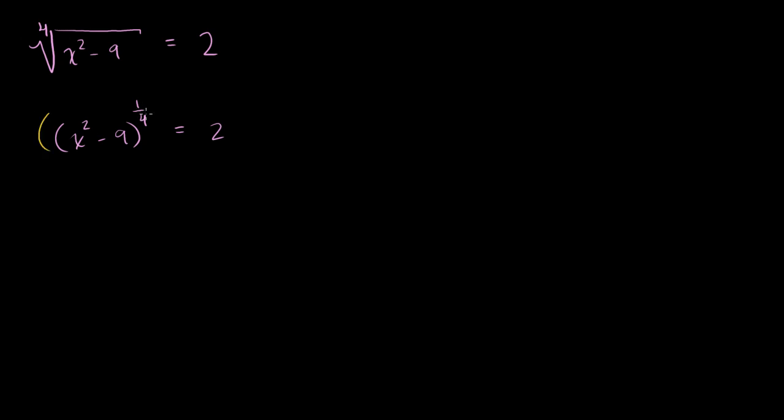Now, if we raise both sides to the fourth power, what happens to this exponent right here? If we raise something to an exponent and then raise that to another exponent, we multiply the exponents. So one-fourth times 4 is 1. So this just becomes x squared minus 9 to the first power, or we could just write x squared minus 9.